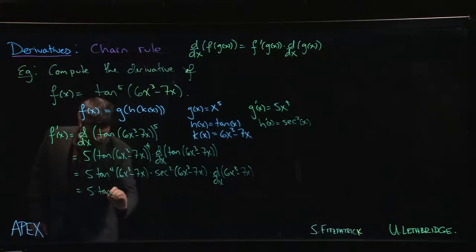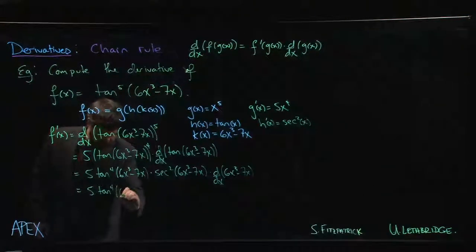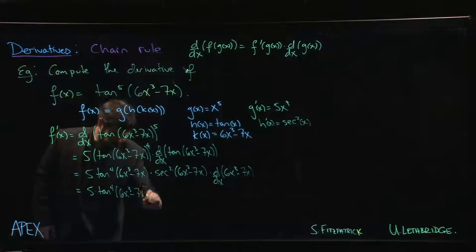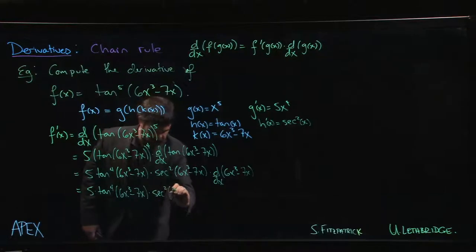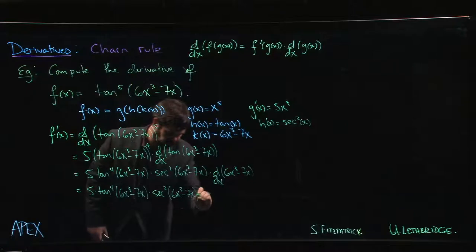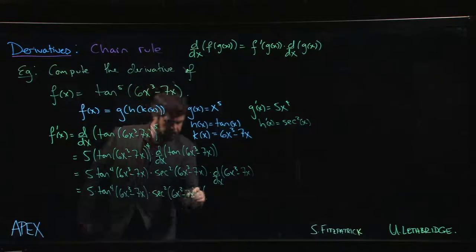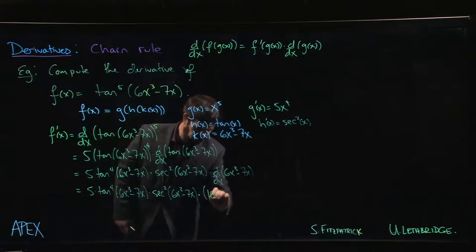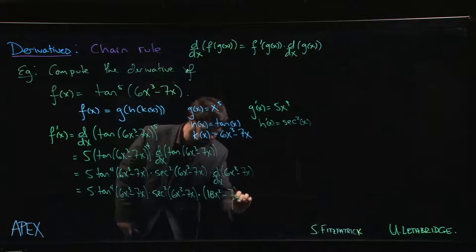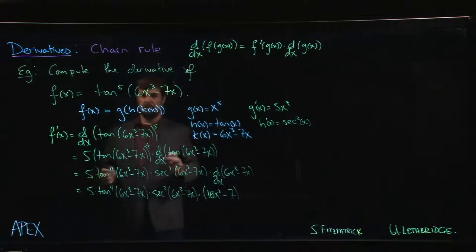tan to the 4 of 6x cubed minus 7x, times secant squared at 6x cubed minus 7x, multiplied by—so the derivative of x cubed is 3x squared times 6 gives us 18x squared minus 7. And then you're done.